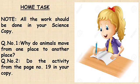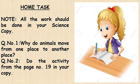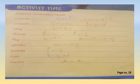Now it's time for some homework, kids. Do all the work in your science copy. Question one: why do animals move from one place to another? Question two: do the activity from page number 19 in your copy. In this activity, you have to write the names of animals that climb, crawl, dig, float, fly, glide, jump, run, and swim.